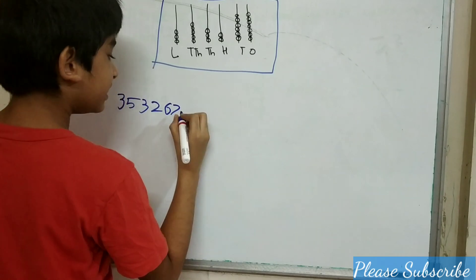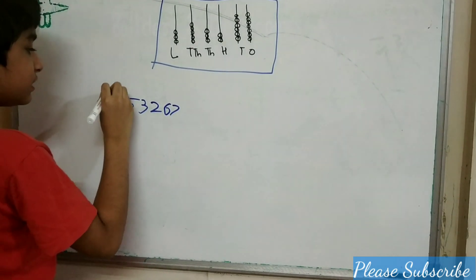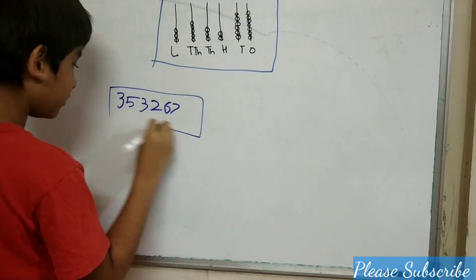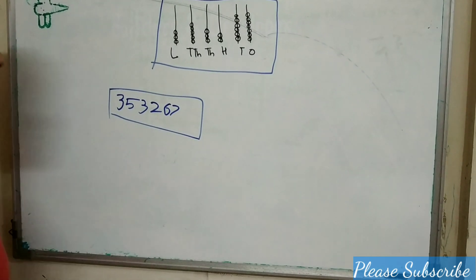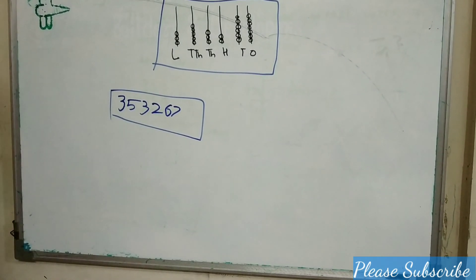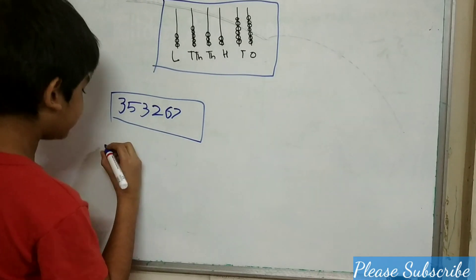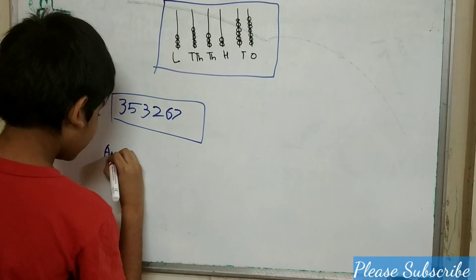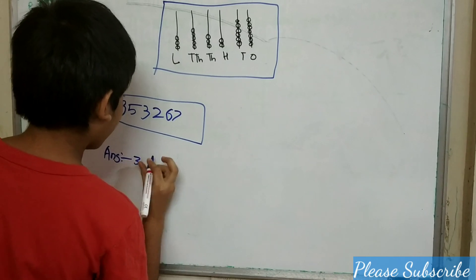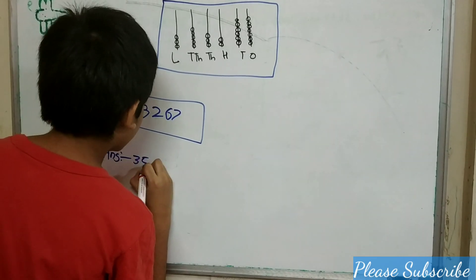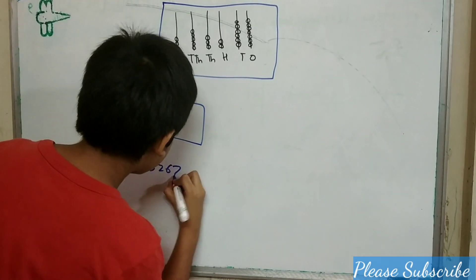7 beads in the ones row. So this number is 353,267. My answer is 353,267.